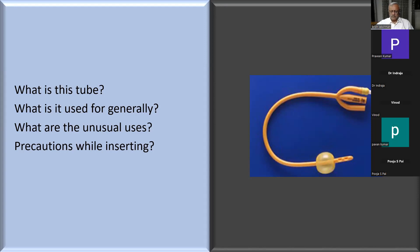If urine doesn't come out, it may be because of lignocaine jelly blocking the terminal end, or the catheter may not be in the bladder. Wait and give suprapubic pressure. If that doesn't work, suction it or push some saline into the main channel - that will open it up and you'll get a bit of urine. Then inflate the balloon - 10 ml, or even 5 ml may be enough.